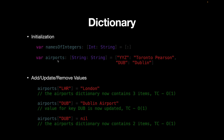To initialize a dictionary with default values, you can define it like: var airports: [String: String] = ["YYZ": "Toronto Pearson", "DUB": "Dublin"]. To add a new value, simply assign it using the key — for example, airports["LHR"] = "London" adds a new entry with key LHR and value London. The airport dictionary now has three items: YYZ/Toronto Pearson, DUB/Dublin, and LHR/London.